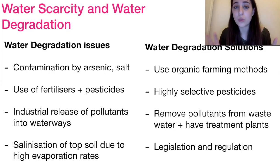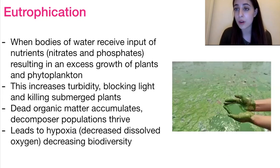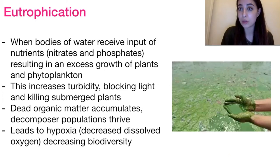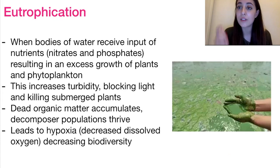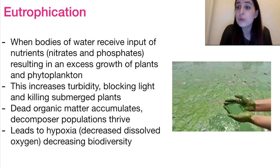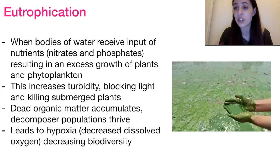The final process to introduce is eutrophication, which is basically when a body of water receives an excess input of nutrients — namely phosphates and nitrates that come primarily from fertilizers. This causes an excess growth of plants and phytoplankton, as you can see in the picture. What happens next is an increase in turbidity — how murky the water is — which blocks light access to submerged plants, causing them to die. In turn, there is an accumulation of dead organic matter and more food for decomposers, which as they break down the organic matter leads to hypoxic, low-oxygen water. All of this decreases biodiversity, leaving an environment that very few species can withstand.